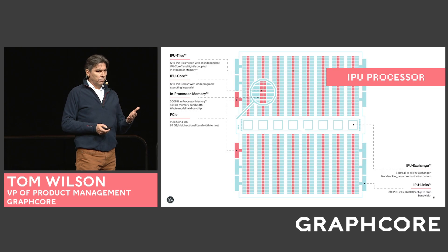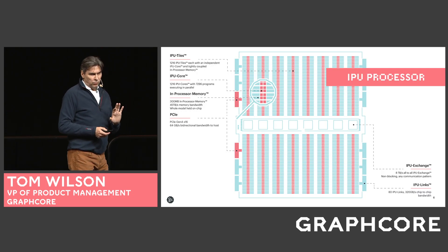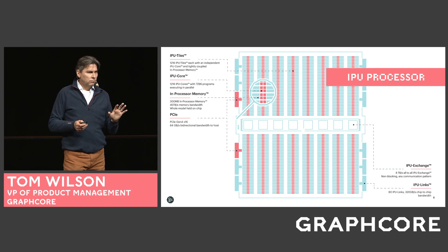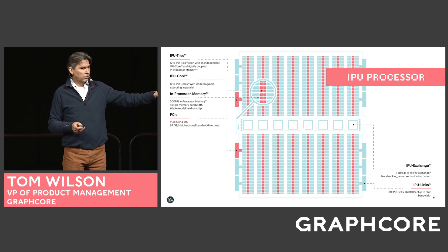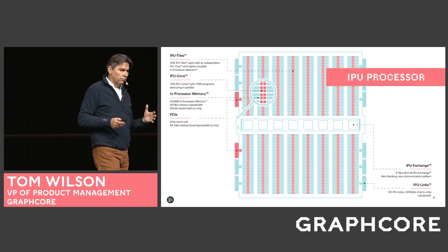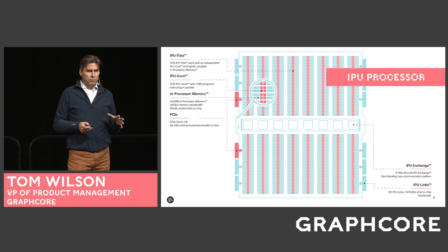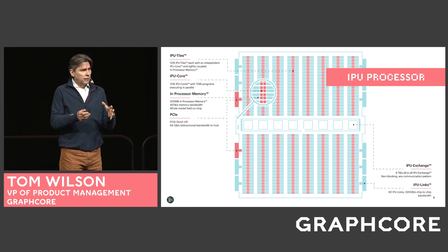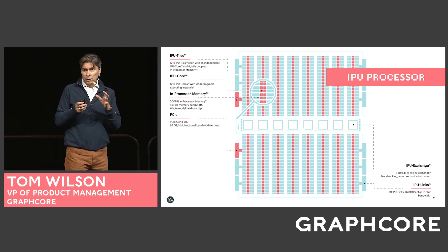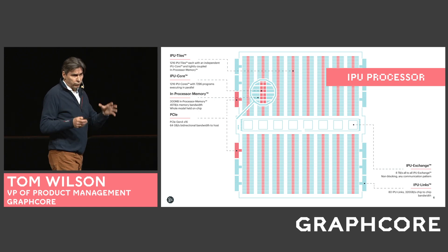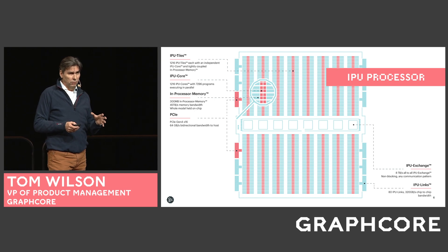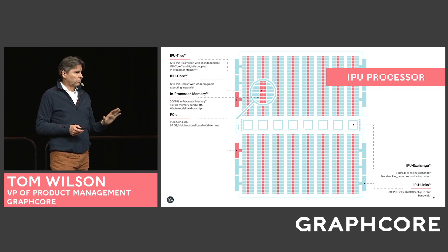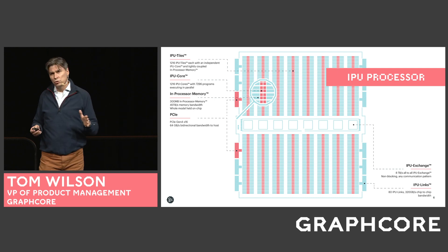A good way to describe the IPU is as a massively parallel MIMD processor, quite in contrast to the SIMD and SIMT architectures we're used to. It has over 1,200 independent processor cores that we call IPU tiles. Each of these IPU tiles has its own dedicated non-shared in-processor memory — 256 kilobytes of in-processor memory per IPU tile, for a total of 300 megabytes of in-processor memory across the processor. It's a huge amount of SRAM.